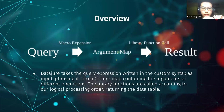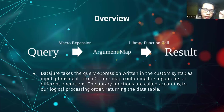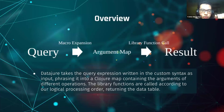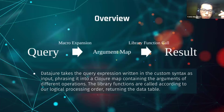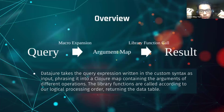Here is the overview of DataJure. This diagram shows how it works. Basically, DataJure takes a query expression written in our custom syntax — thanks to the powerful macro system of Clojure. DataJure uses macro expansion to parse it into a Clojure map containing the arguments for the different operations, then calls the corresponding library functions according to a logical processing order, and finally returns the result — the updated data table.